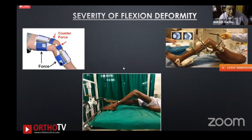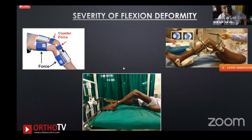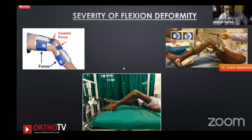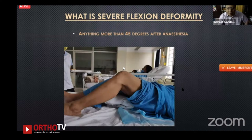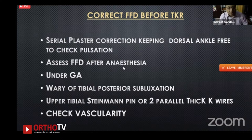For severe flexion deformity, a dynamic splint can be used — set at 1–2mm per day, kept for a day, then used especially at night. This corrects flexion deformity before or after TKR. The dynamic splint method is one option; serial plaster correction with the dorsal angle kept free to check pulsation is another we have used, with some patients improving enough that they no longer require TKR.